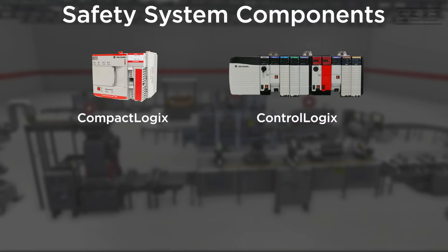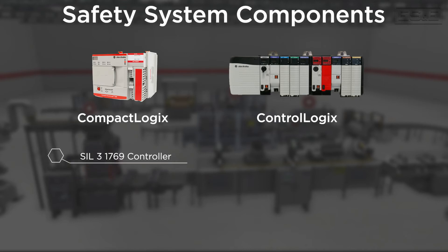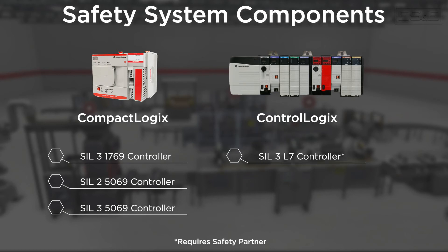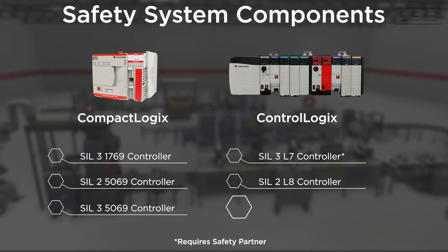The CompactLogix starts with the SIL-3 rated 1769 controllers, but it also encompasses the SIL-2 and SIL-3 5069 controllers. The ControlLogix also has two levels of controllers, which are the SIL-3 rated L7 controllers, which require a safety partner, and the second level is the SIL-2 L8 controllers or SIL-3 L8 with a safety partner.